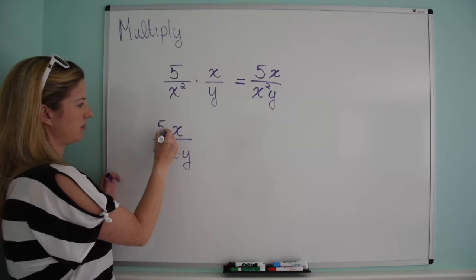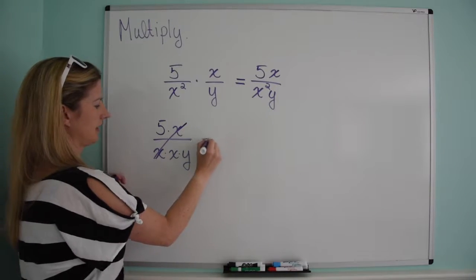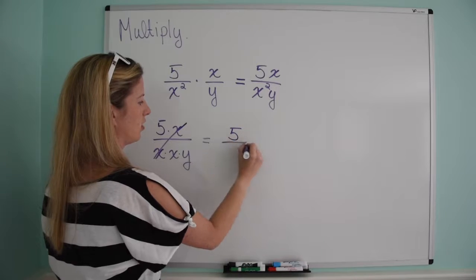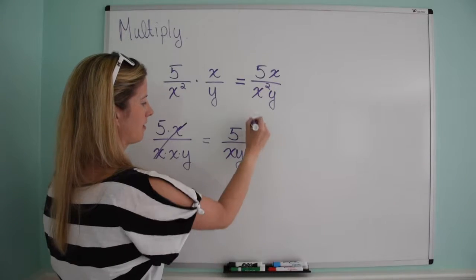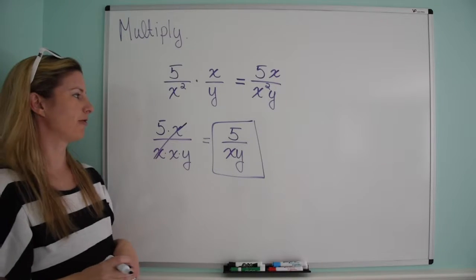So I've got an x up here - remember, that's multiplication. I've got an x up here and two x's down here. So that can divide out and I am left with 5 over xy. And that's my answer.